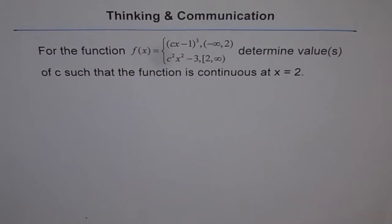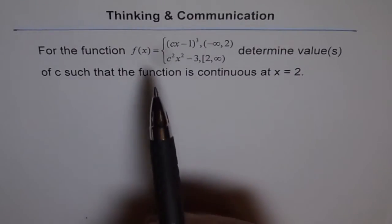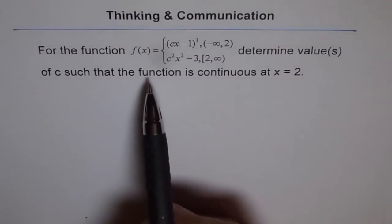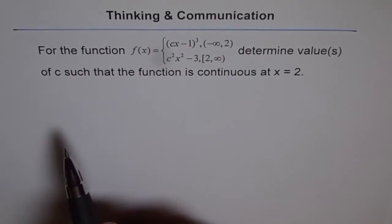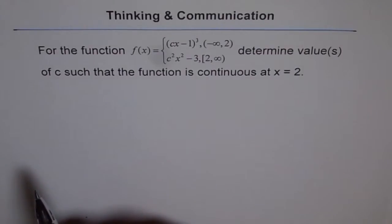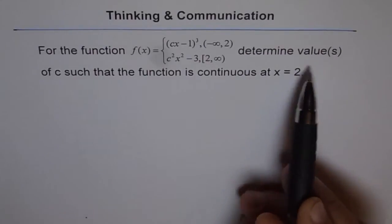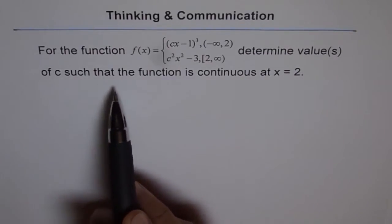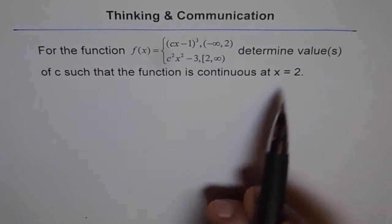This is a thinking and communication problem. For the function f of x, it is a piecewise function equal to cx minus 1 whole cube when x is from minus infinity to 2, not included, and equal to c squared x squared minus 3 when the domain is from 2 to infinity, with 2 included. Determine the values of c such that the function is continuous at x equals 2.